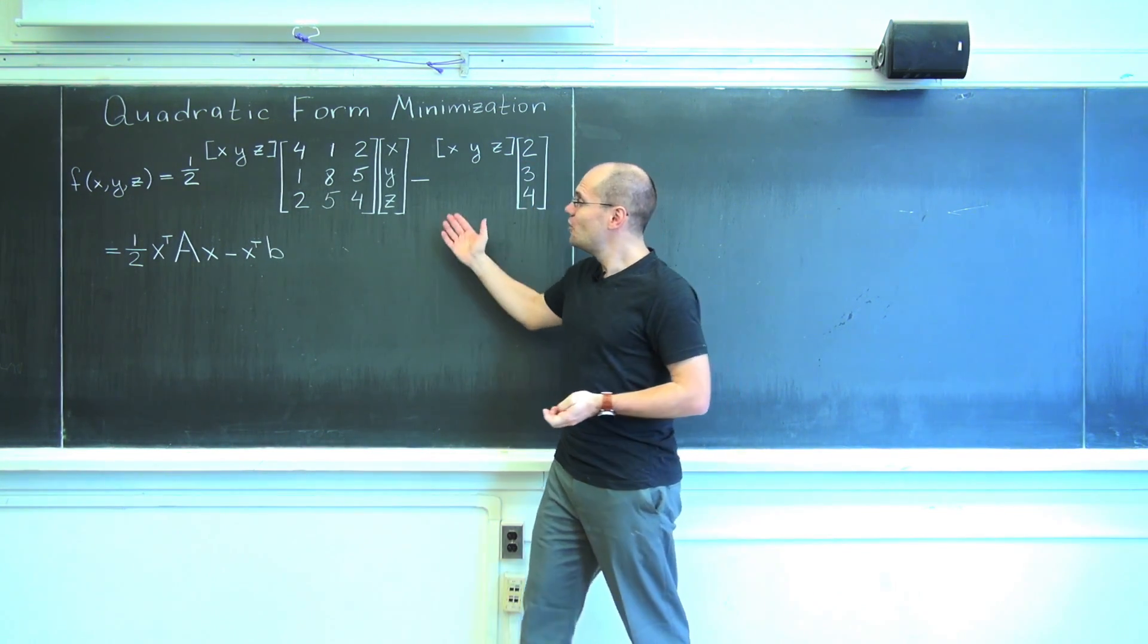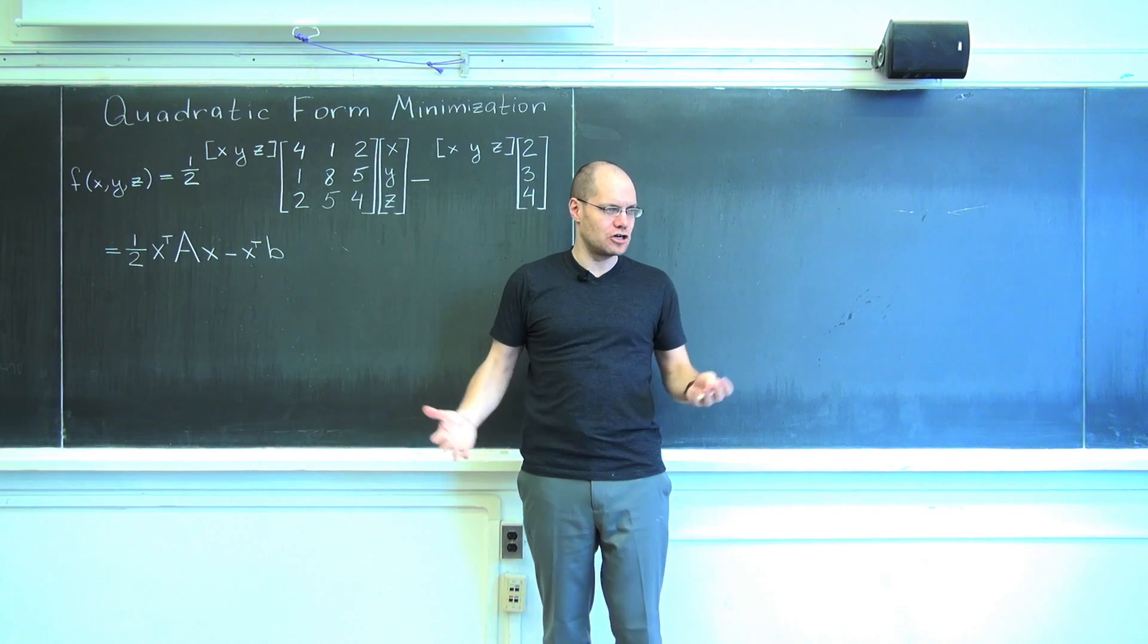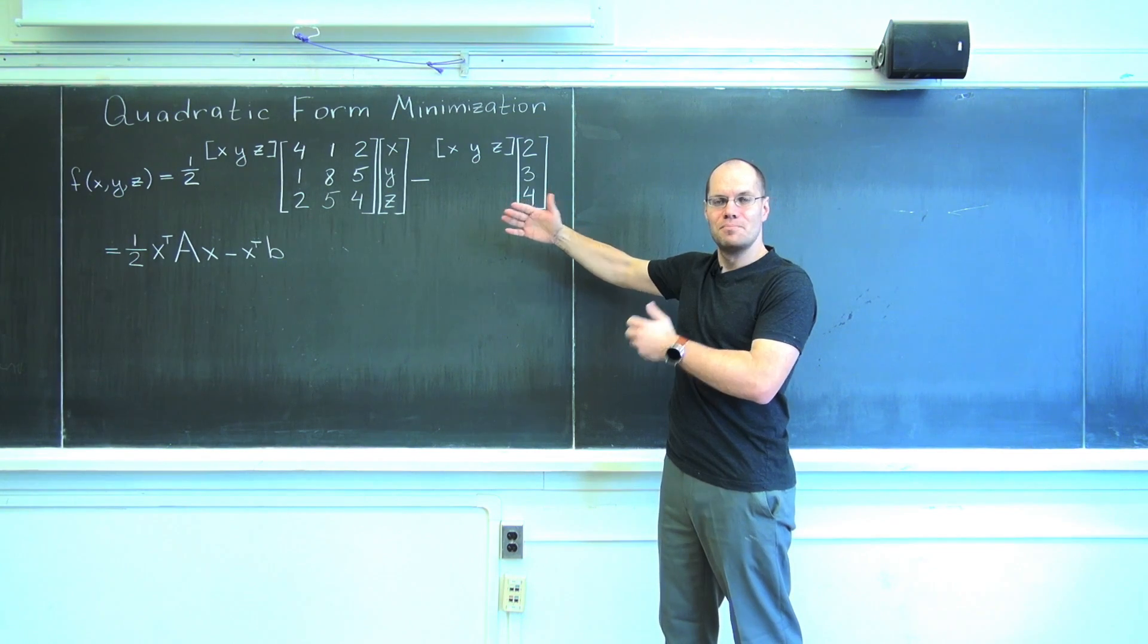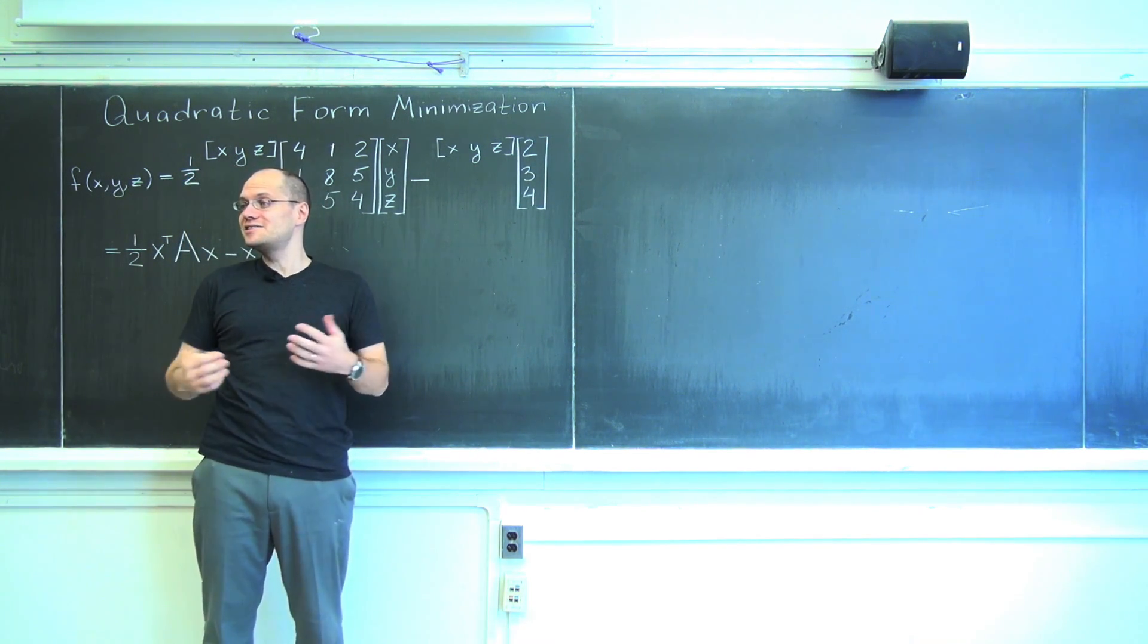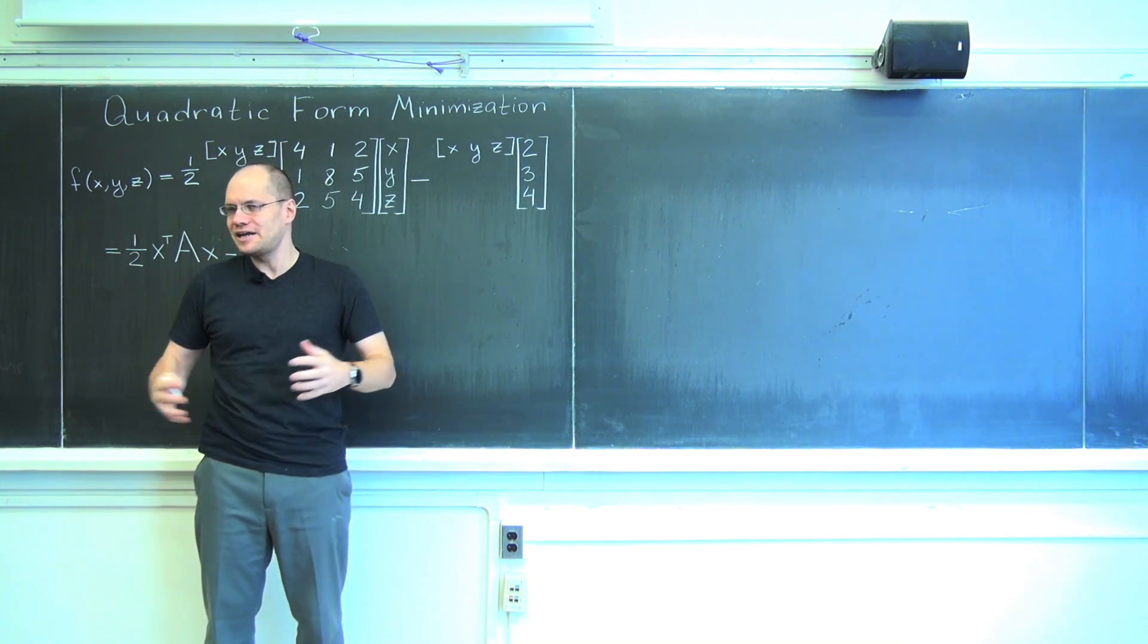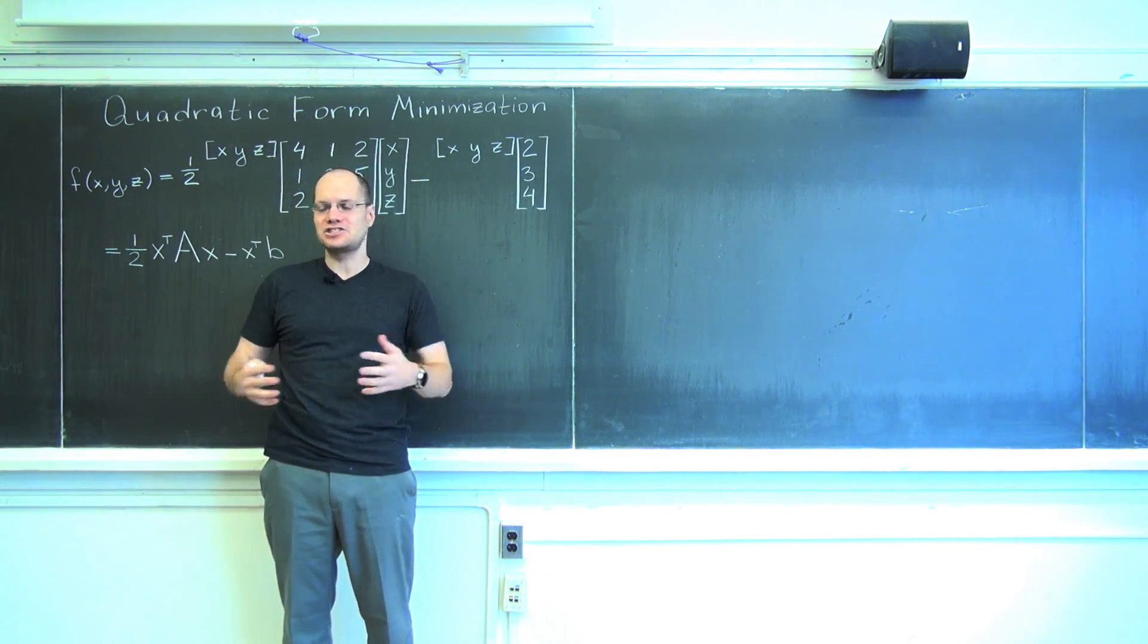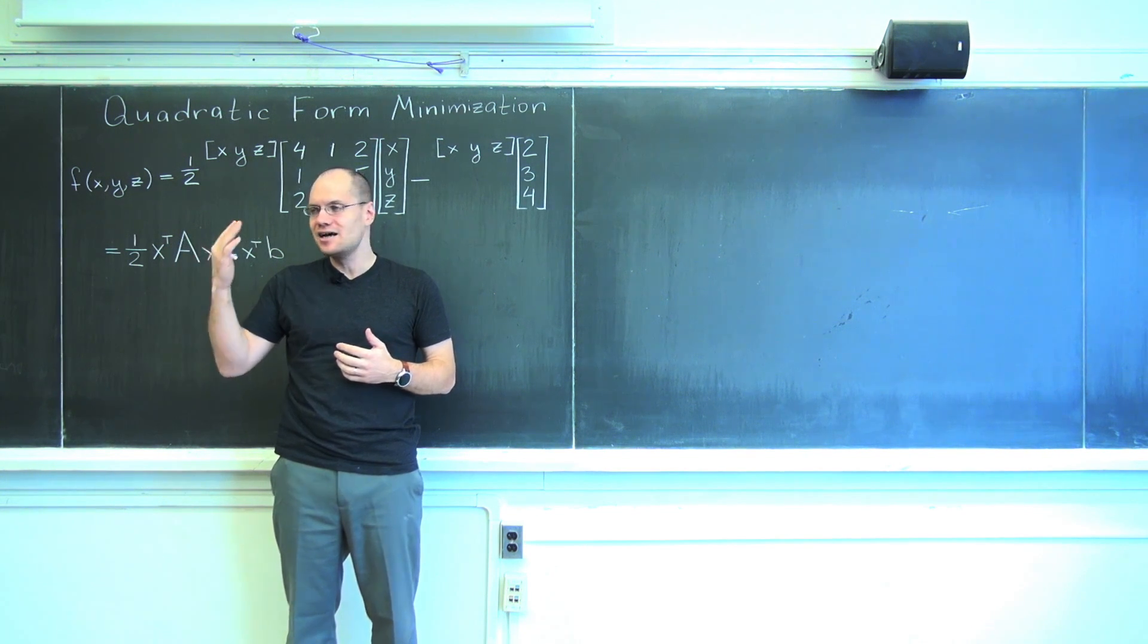But from the calculus point of view, what you're looking at is just a function of three variables, and I asked you to find where the minimum occurs. The equation that determines where the minimum occurs, and that's why the constant term didn't matter. The constant term only determines what the minimum is but not where it occurs.